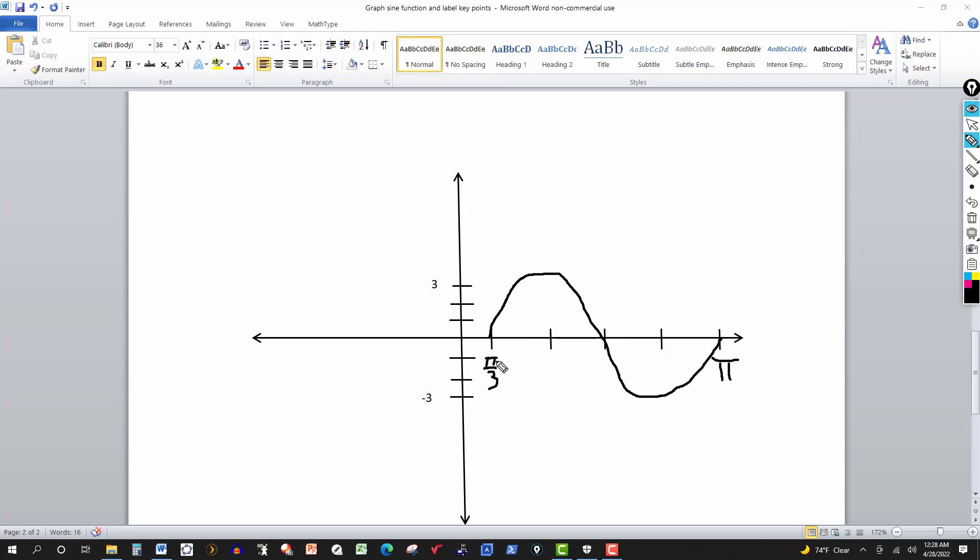So then we want to label these points. So obviously this first point is going to be pi over 3 comma 0, that's for this point. And then the end point is going to be pi, 0 also, that's where it ends.